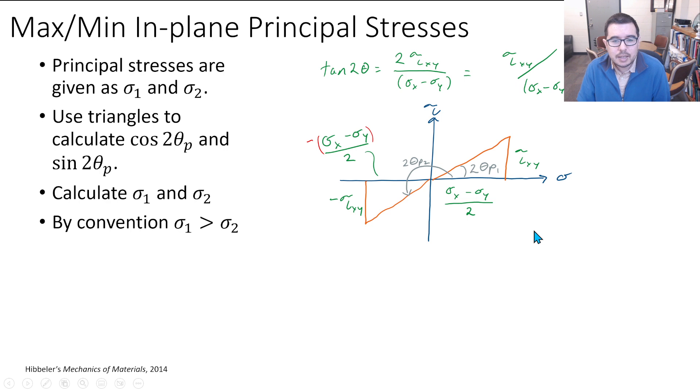If we want to figure out the magnitude here of one of these sides, we can - it's just the square root of this opposite squared plus this adjacent squared. Also keep in mind that this is an angle of two theta. This is two theta p right in here.